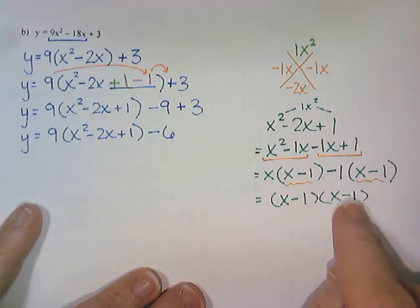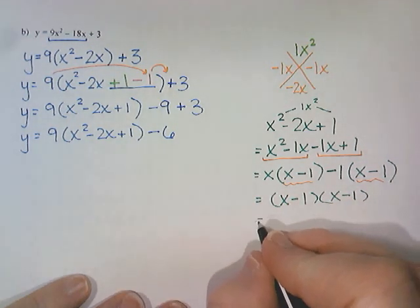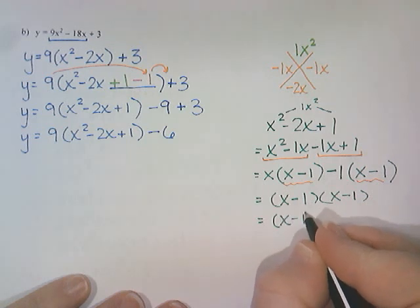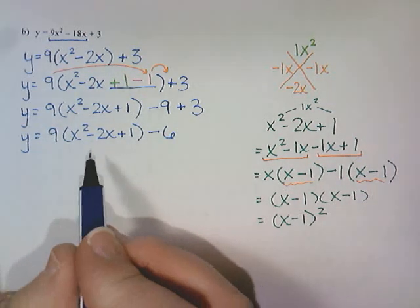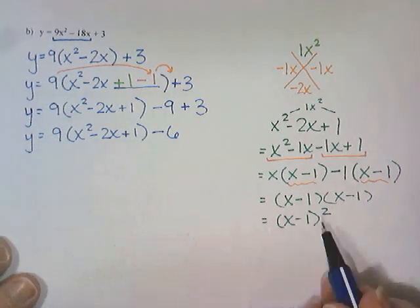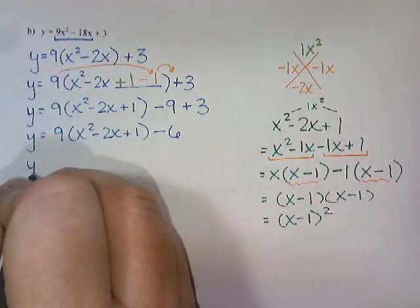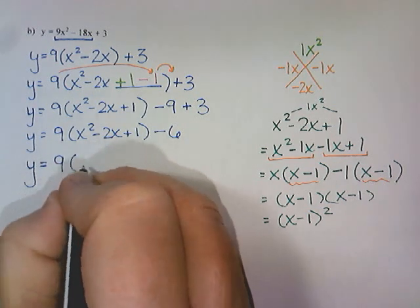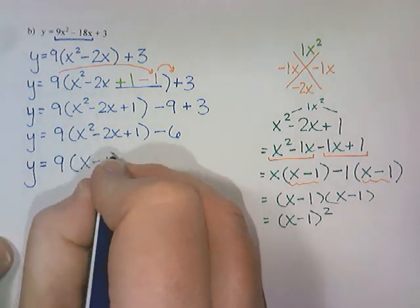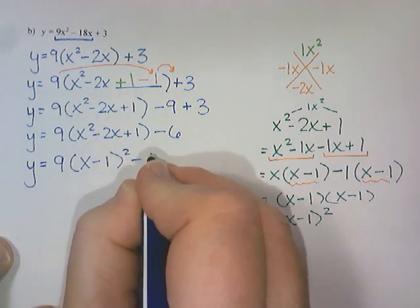Alright, (x - 1) times (x - 1) is (x - 1)². So I'm going to replace the x² - 2x + 1 with (x - 1)² to get my final vertex form of y = 9(x - 1)² - 6.